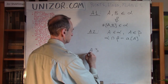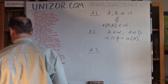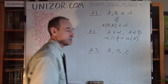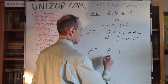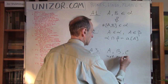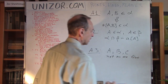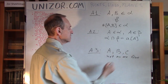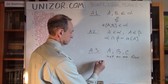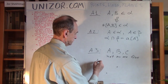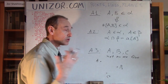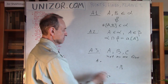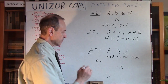Axiom number three: if you have three points A, B, and C in space which do not all lie on one straight line, then there is always a plane, and one only plane, which passes through them. In this particular case, this is the plane of this whiteboard.